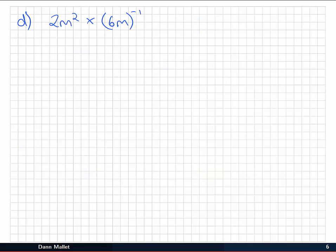In the final part of this example, we're asked to simplify 2m² times 6m to the minus 1. There's a couple of ways we could go about this, but I'm going to do this one by expanding that minus 1 power using my index laws. So I'll have 6 to the minus 1 and m to the minus 1.